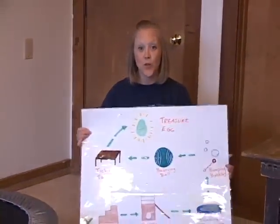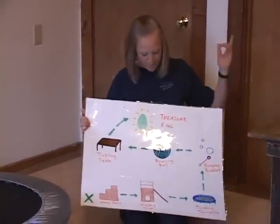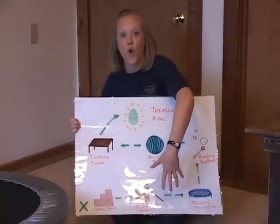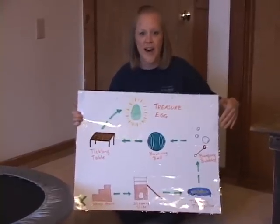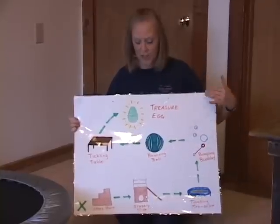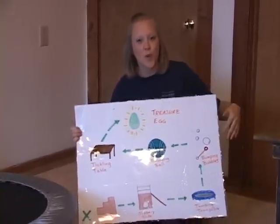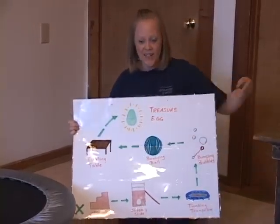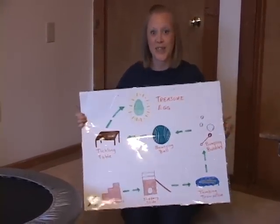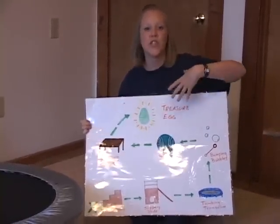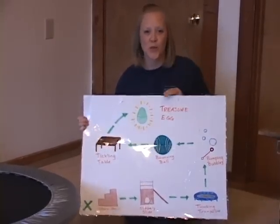Hello everyone, I'm excited to be with you. I want to talk about my theme, which is an amazing treasure egg obstacle course. As you can see, I have a poster board with different items and objects found in our playroom drawn on it to represent the obstacle course. You can get a poster board yourself, and if you don't have these objects in your room, you can use whatever furniture and objects you have and draw them on the poster board as a reminder of how the obstacle course will take place.